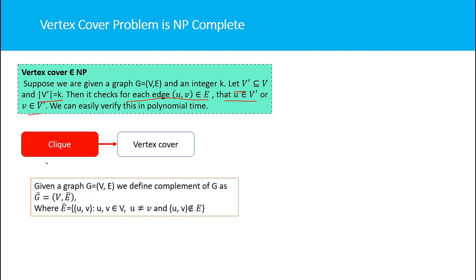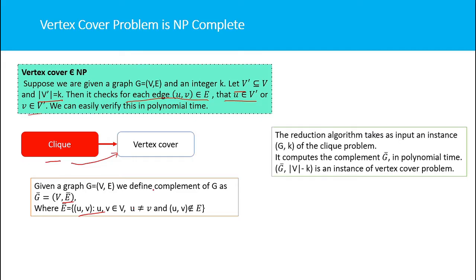Now we prove vertex cover is NP-hard. We take a known NP-hard problem — the clique problem, which we proved in a previous lecture — and reduce it to the vertex cover problem. To do this, we find the complement of a graph by adding the edges that do not belong to the current graph. The reduction algorithm takes an input instance of the clique problem, complements the graph in polynomial time, and produces an instance (G-bar, |V| minus K) of the vertex cover problem.